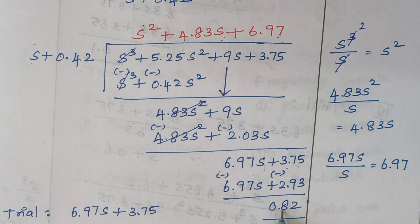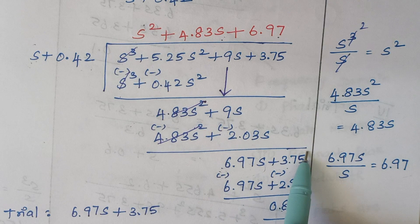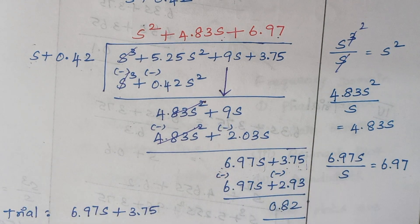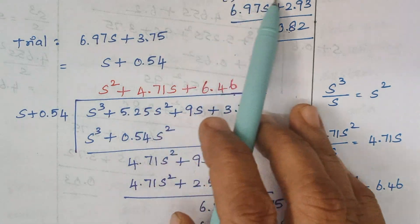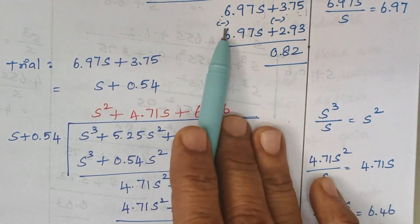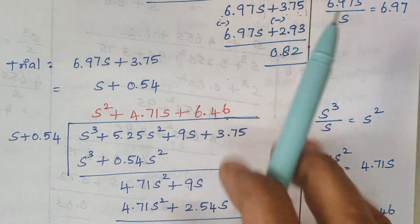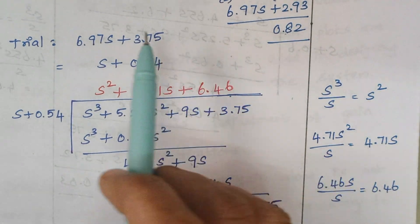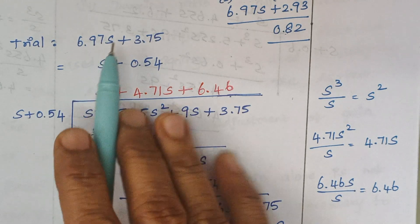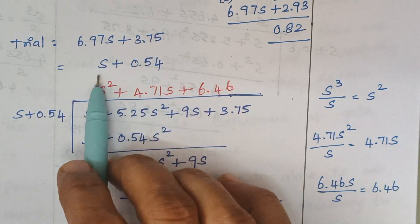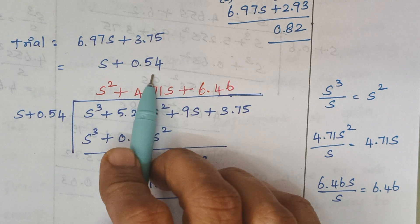We have to continue till we get 0. So the next step is we are moving to our second trial. For our second trial, we have to use this factor as a divisor — that is 6.97 s plus 3.75. As usual, we have to divide this entire expression by 6.97. When we divide, we are coming up with this answer.